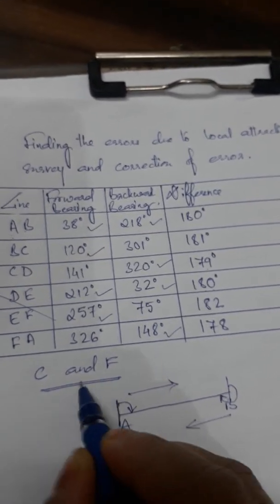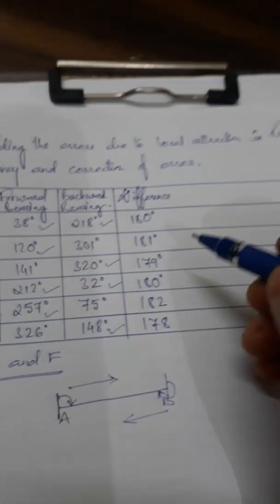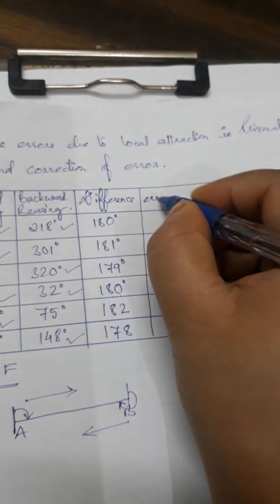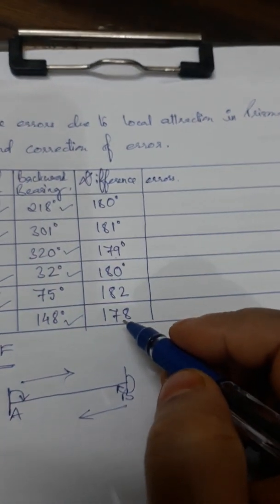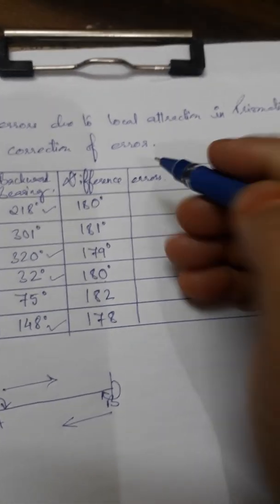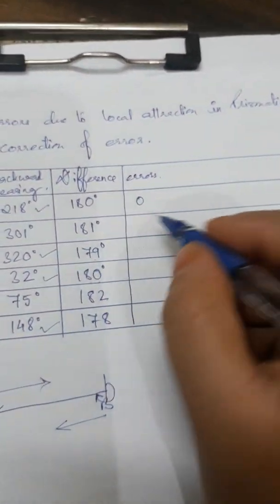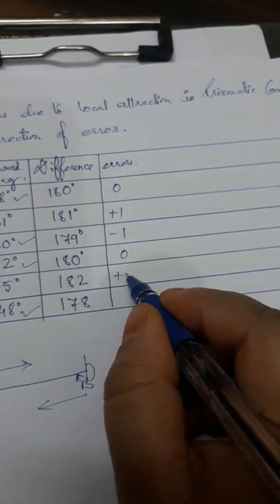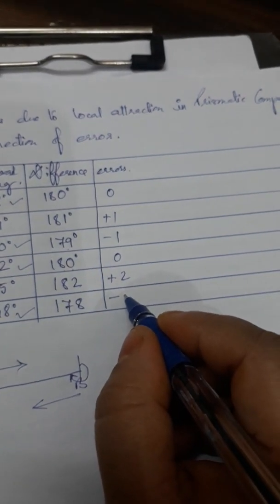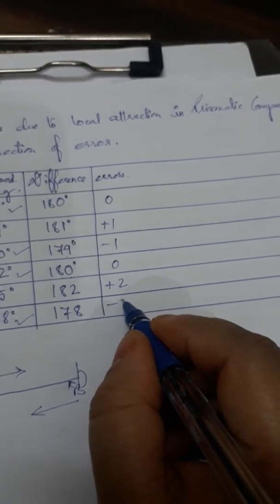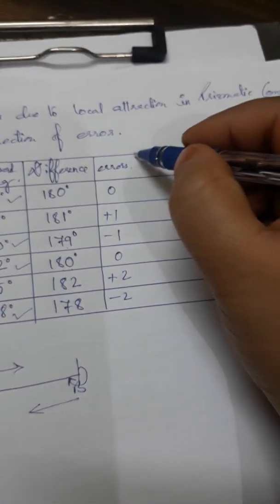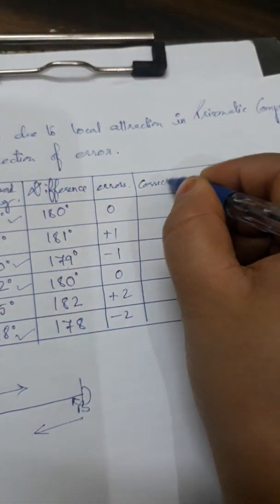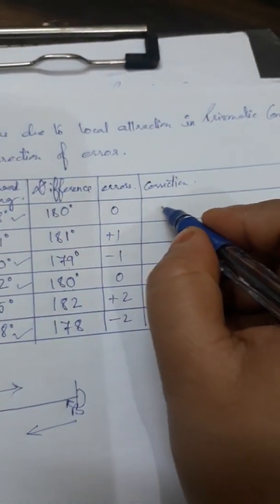Now we will find out the errors in each of these figures. Since the difference is 180, the error is 0. For BC the difference is 181, so there is a plus 1 error. For CD there is a minus 1 error. For EF there is a 0 error. For FA there is a plus 2 error and a minus 2. These are the errors based on which we will do corrections.